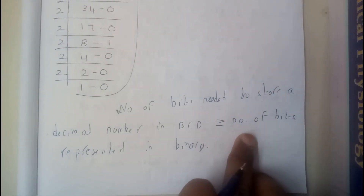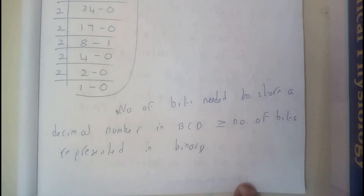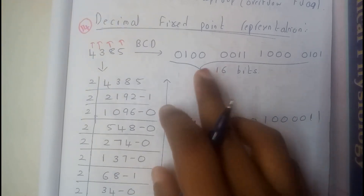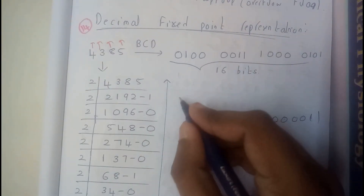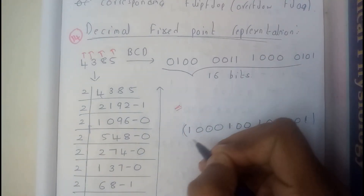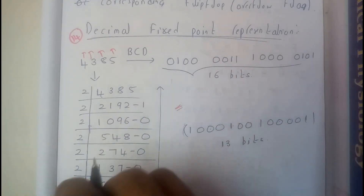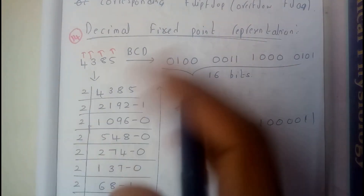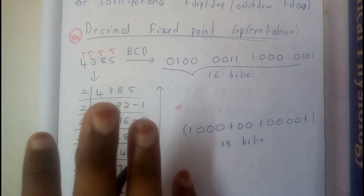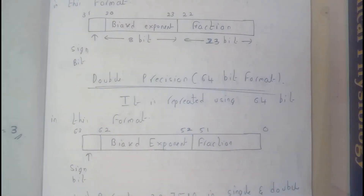The number of bits needed to store a decimal number in BCD is greater than or equal to the number of bits in binary. BCD will never require fewer bits than binary — it will be equal or greater. That's the key takeaway here.